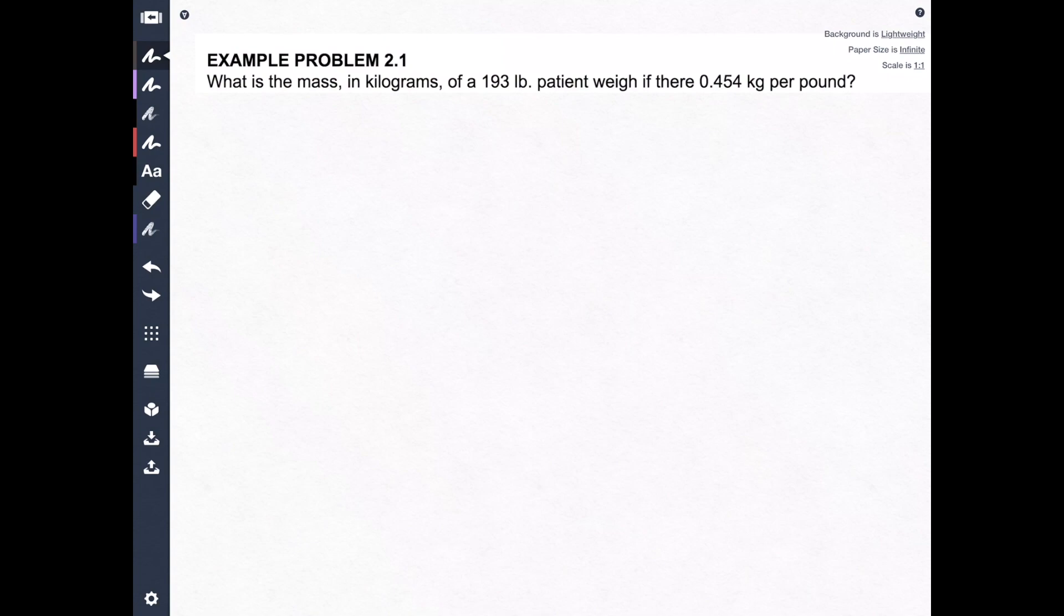What is the mass in kilograms of a 193 pound patient if there are 0.454 kilograms per pound? Alright, so this question gives us a little bit of information. It actually gives us all the information we need. First of all, let's re-read the question and make sure we understand what we're trying to do.